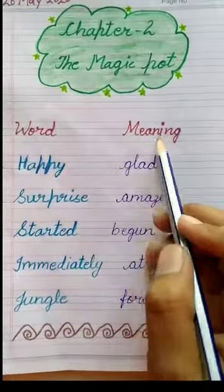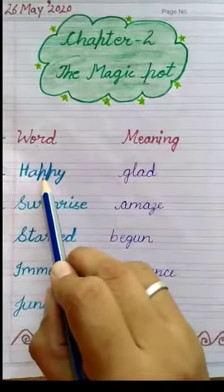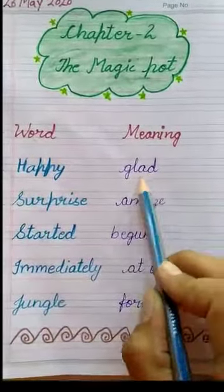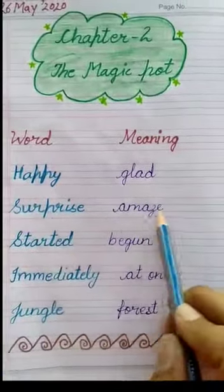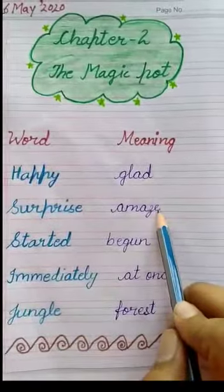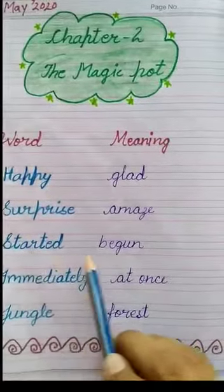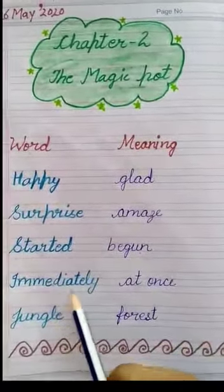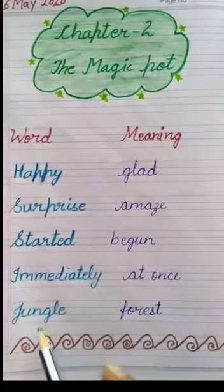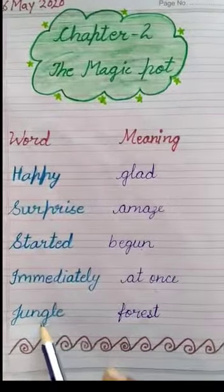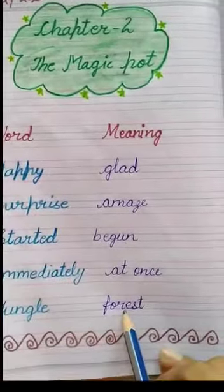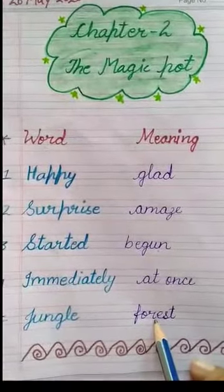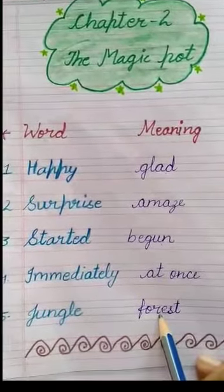First word meaning: 'happy' which means 'glad.' 'Surprise' which means 'amaze.' 'Started' which means 'begun.' 'Immediately' means 'at once.' 'Jungle' means 'forest.' So these are your word meanings — you have to write them like this.